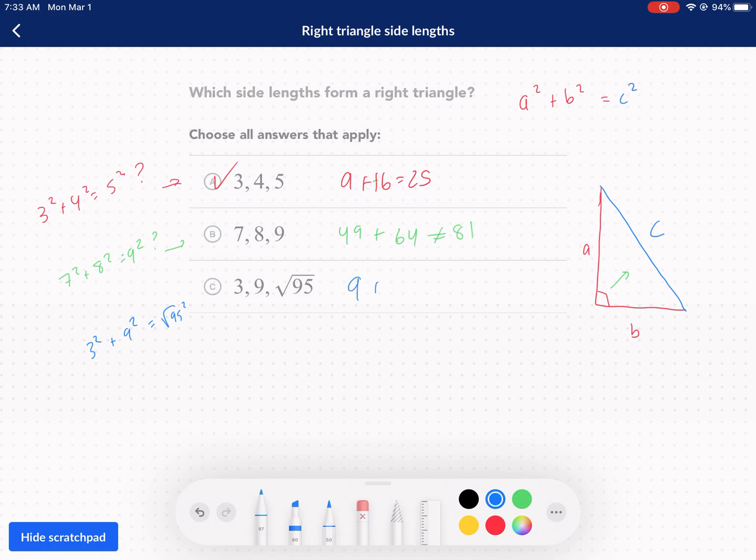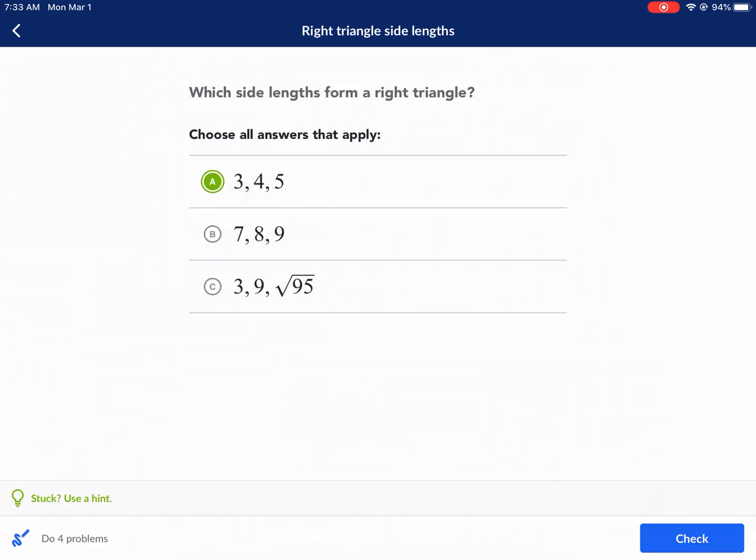Seven squared is 49 plus 64 does not equal 81. So B is not an option here. And then we have nine plus 81. Does that equal the square root of 95 squared, which equals 95. Anytime you square a square root, it undoes the square root. And that does not equal. So the only option here is A.